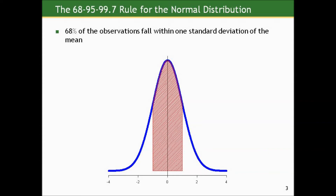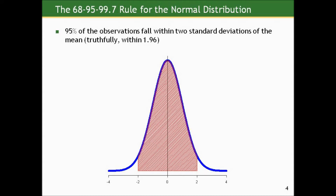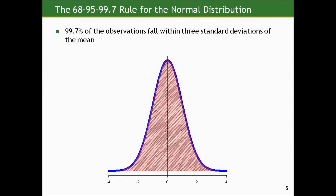Sixty-eight percent of the observations under a standard normal curve fall within one standard deviation of the mean of zero. Ninety-five percent of the observations fall within two standard deviations of the mean. So if you were actually standing at the mean and you spread your arms two standard deviations in either direction from that mean of zero, you'd capture 95% of the area under that curve. It's actually not two standard deviations, but 1.96, but I'd rather you remember two because it's an easier number to work with. And if we went three standard deviations in either direction from that mean of zero, we'd capture almost the entire curve — 99.7%.